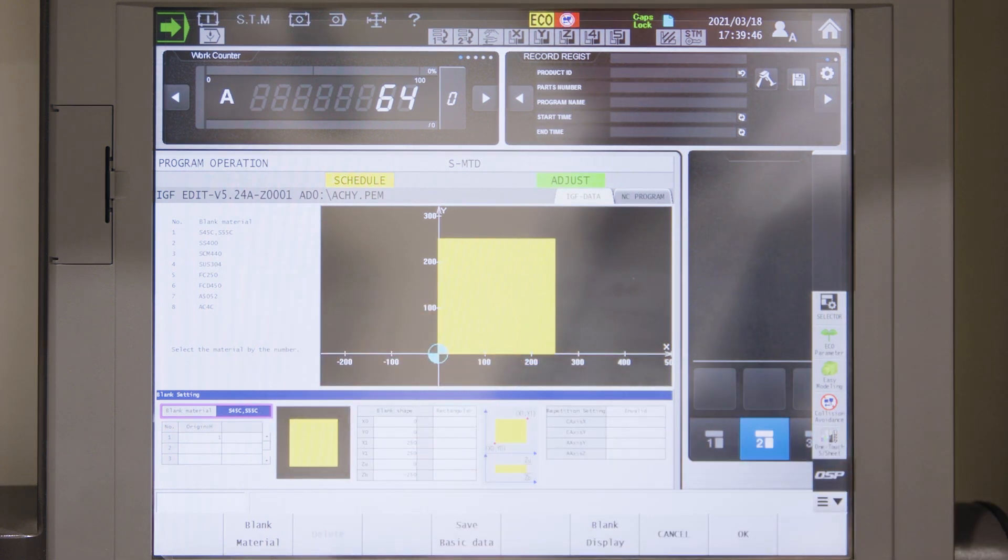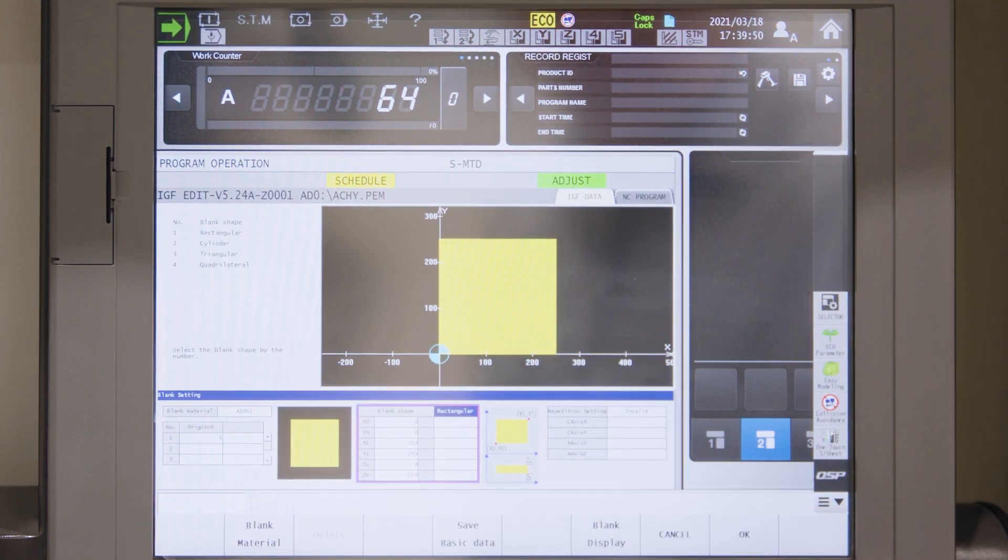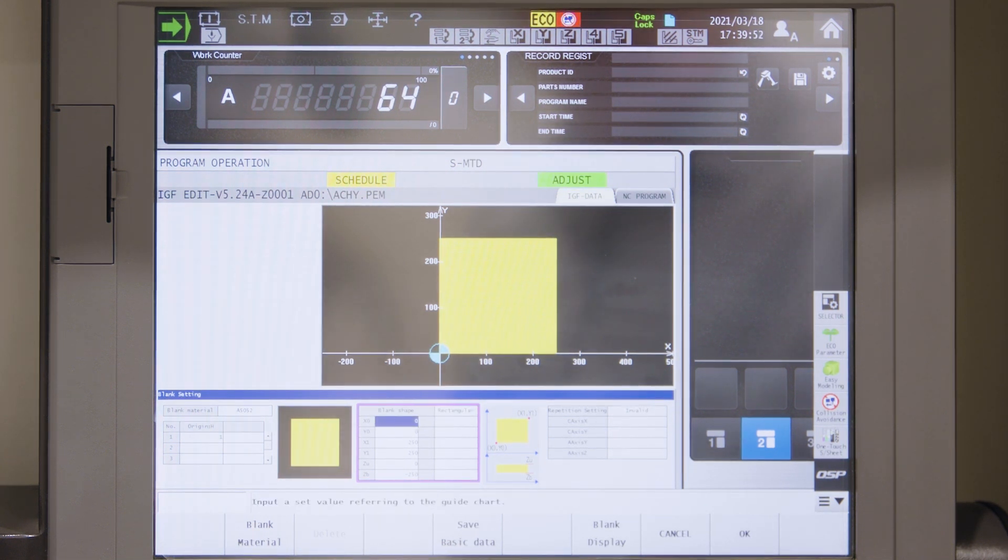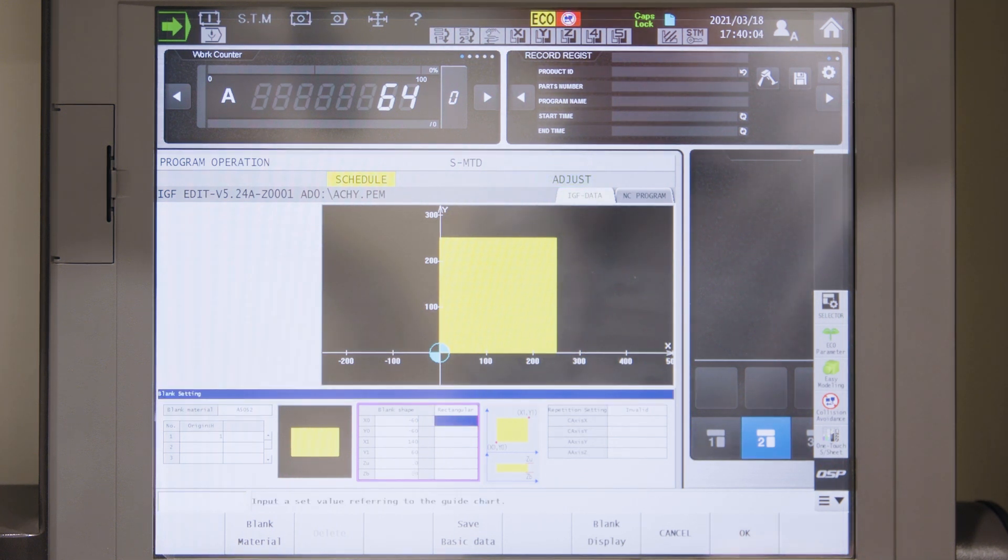I will first select my material, in this case aluminum. We use zero offset number one. I will decide the reference point for the raw material at minus 60, minus 60. Then the opposite corner is at 140 and 60. The material thickness is minus 20. This is ok.